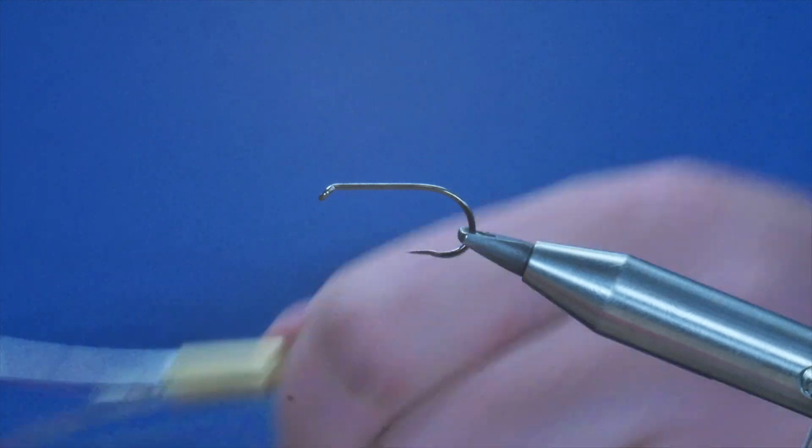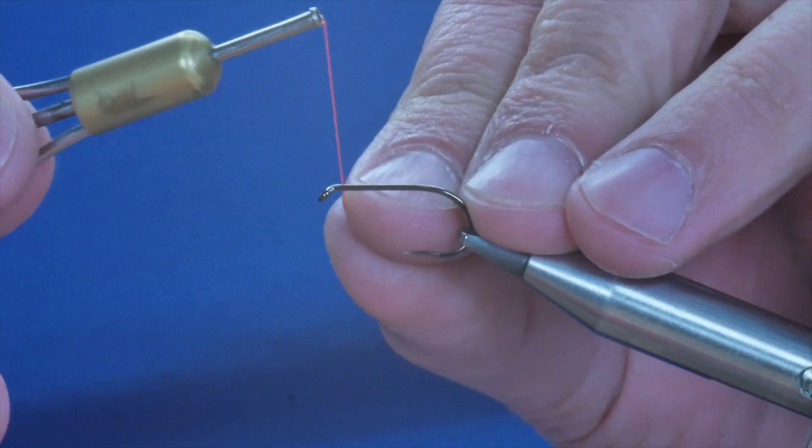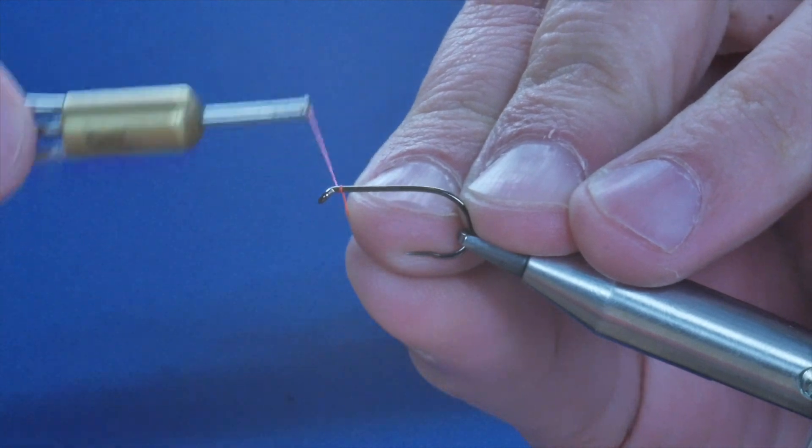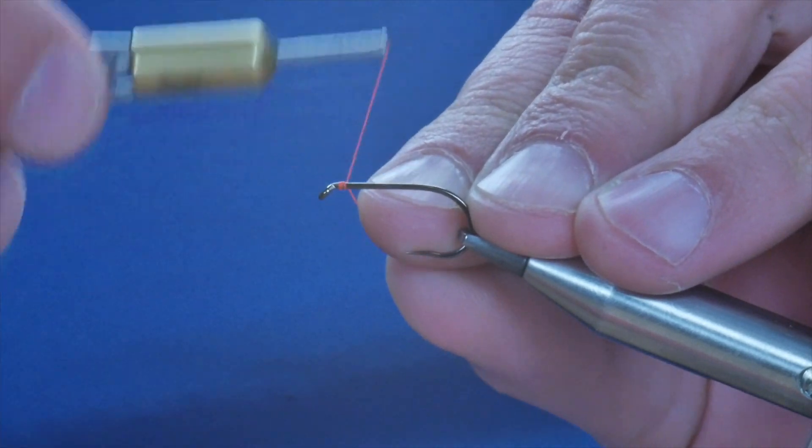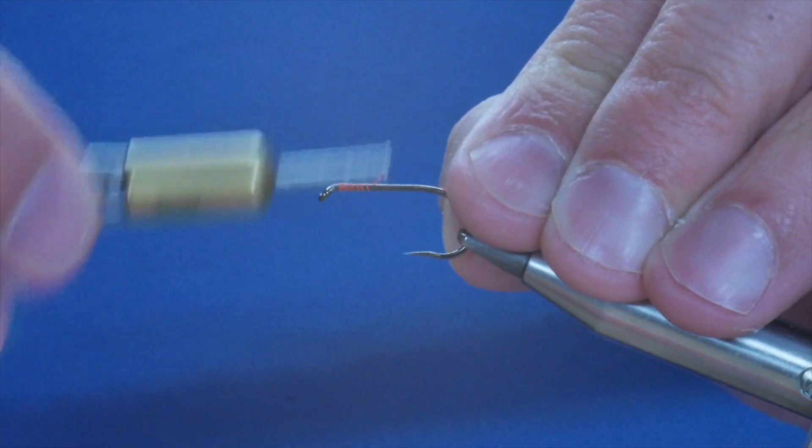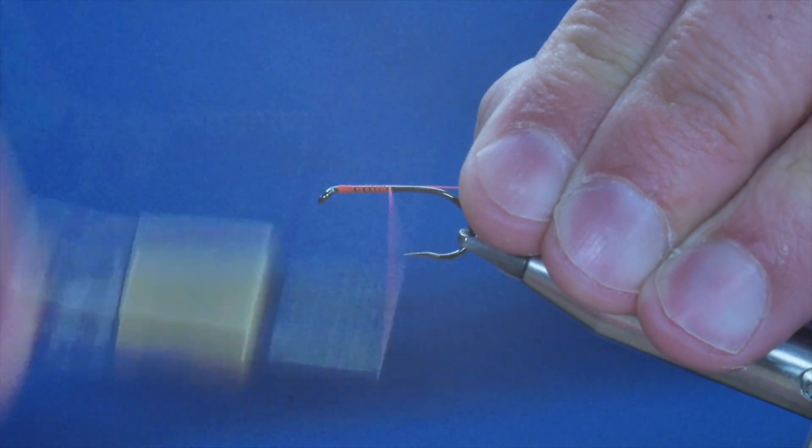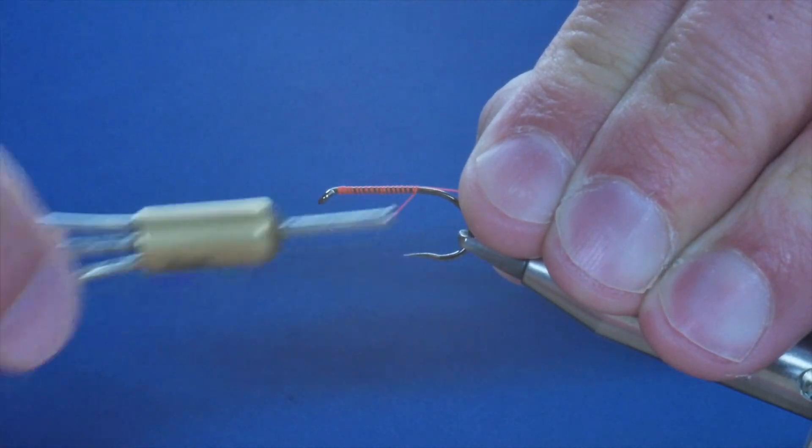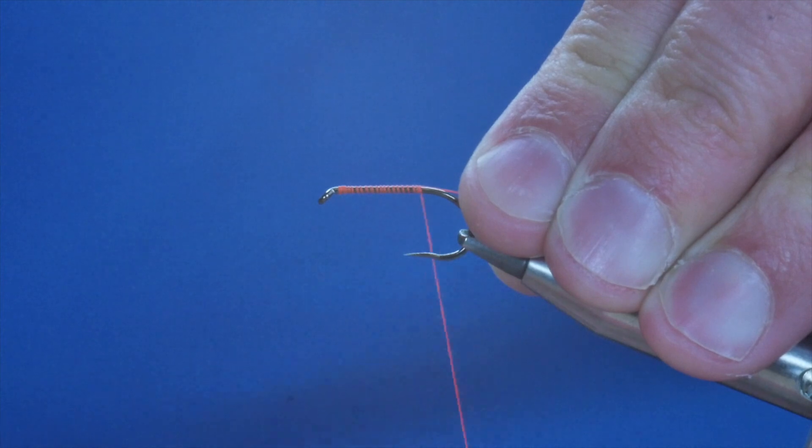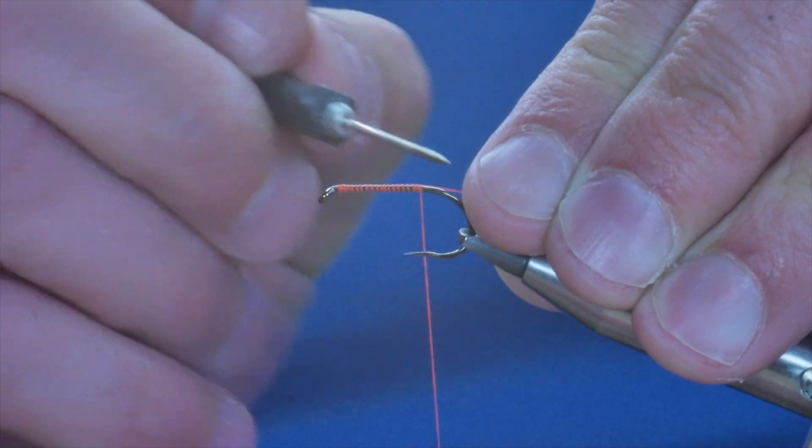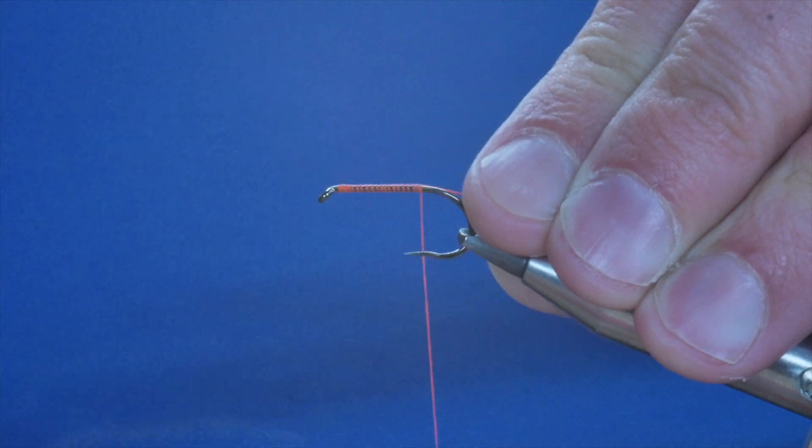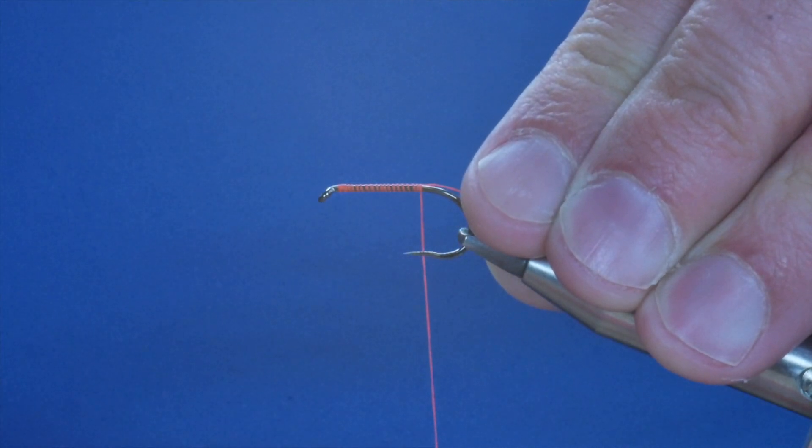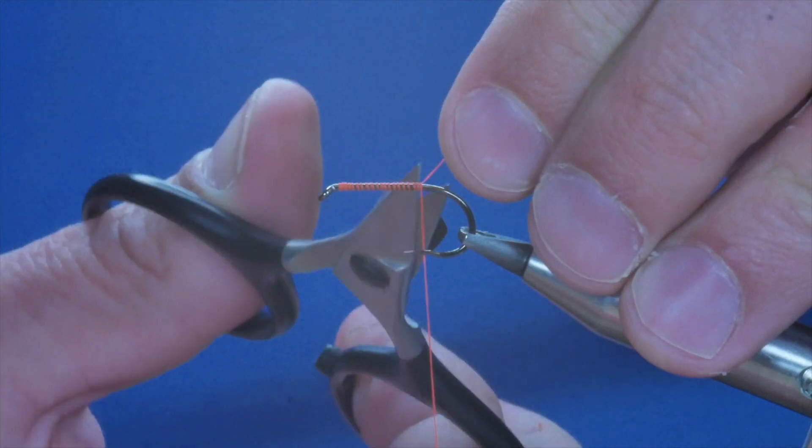I'm going to start just in behind the eye, maybe a millimeter and a half, two millimeters and catch that on. Not worried about putting a nice neat layer of thread down. I'm going to come back to the pronounced bump on the 280 and stop there. Take away my waste.